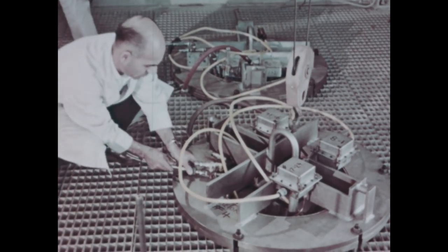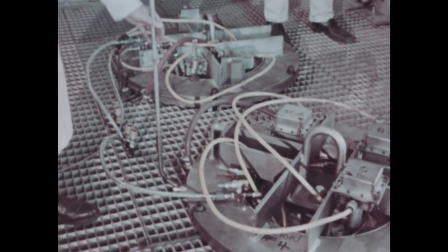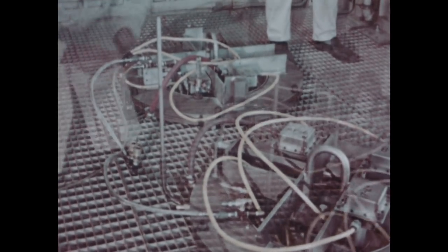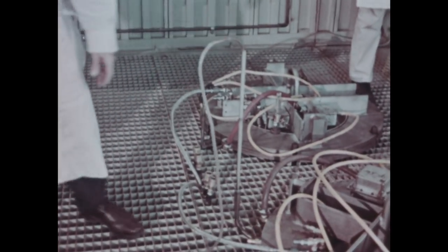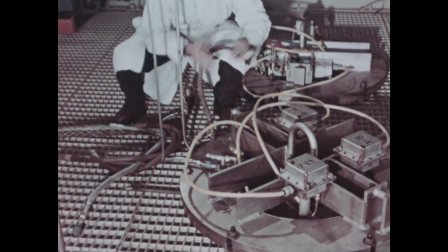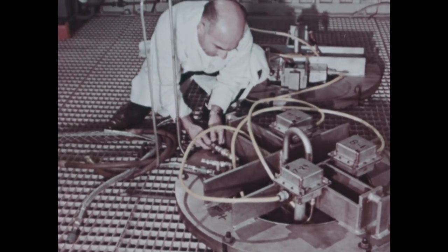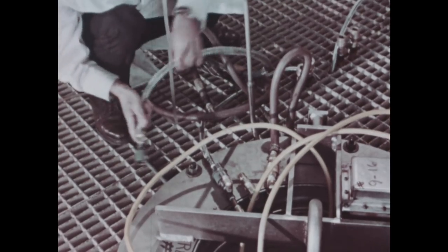After the retort is lowered into a storage hole, it is purged, first with nitrogen to remove all oxygen, then with hydrogen. The copper is annealed in an atmosphere of pure hydrogen to prevent oxidation.